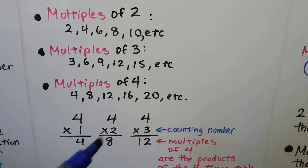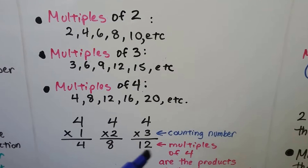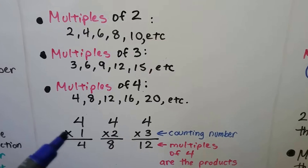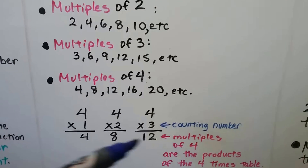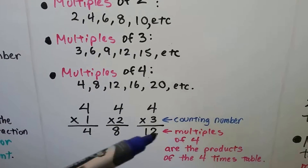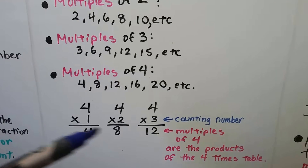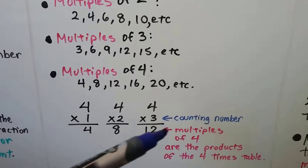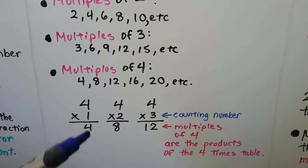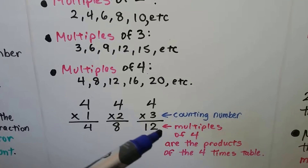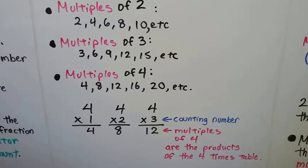Four times one is four, four times two is eight, four times three is twelve — so here's the counting numbers. The multiples of four are the products of the four times table. So we just have four multiplied a multiple amount of times — multiplied by a counting number.